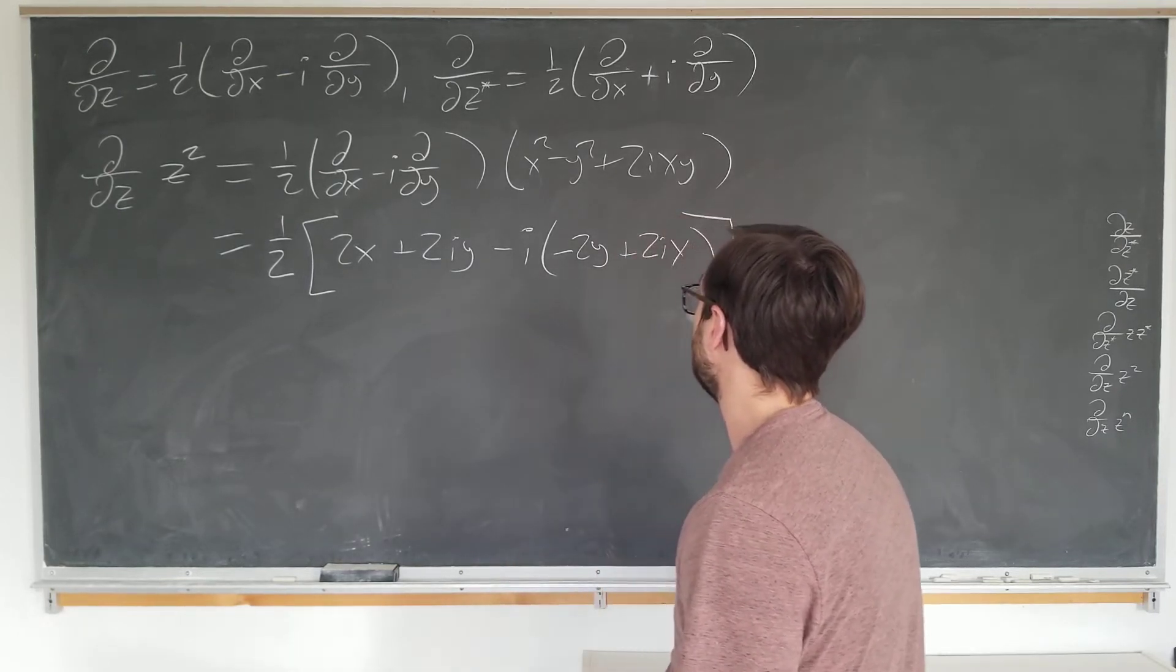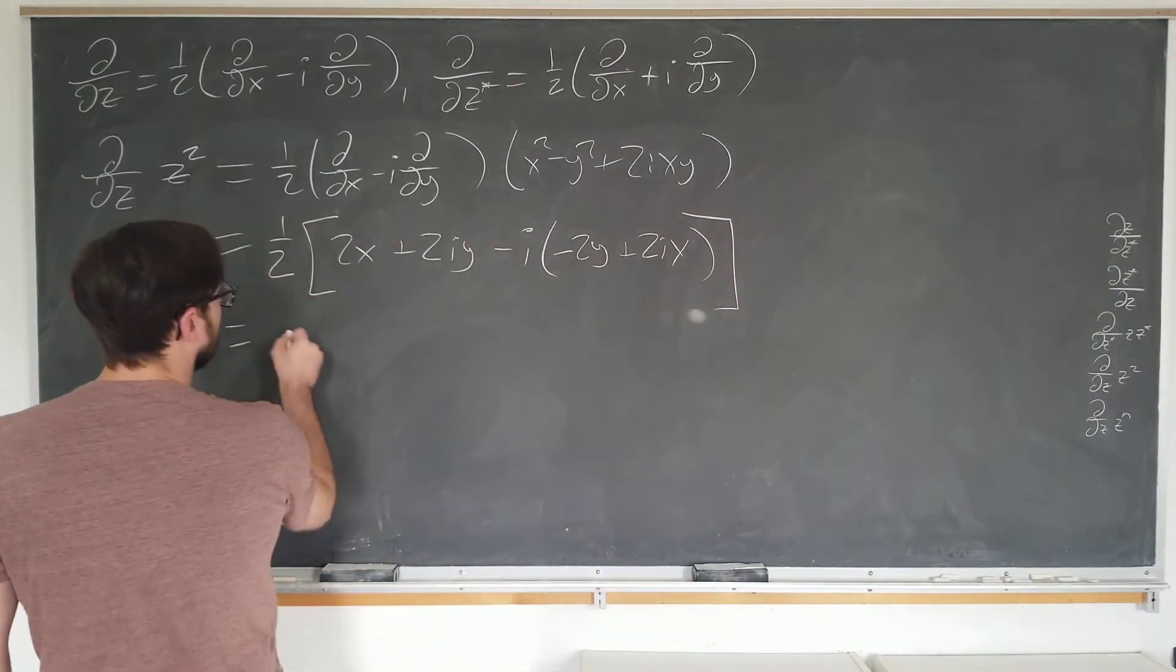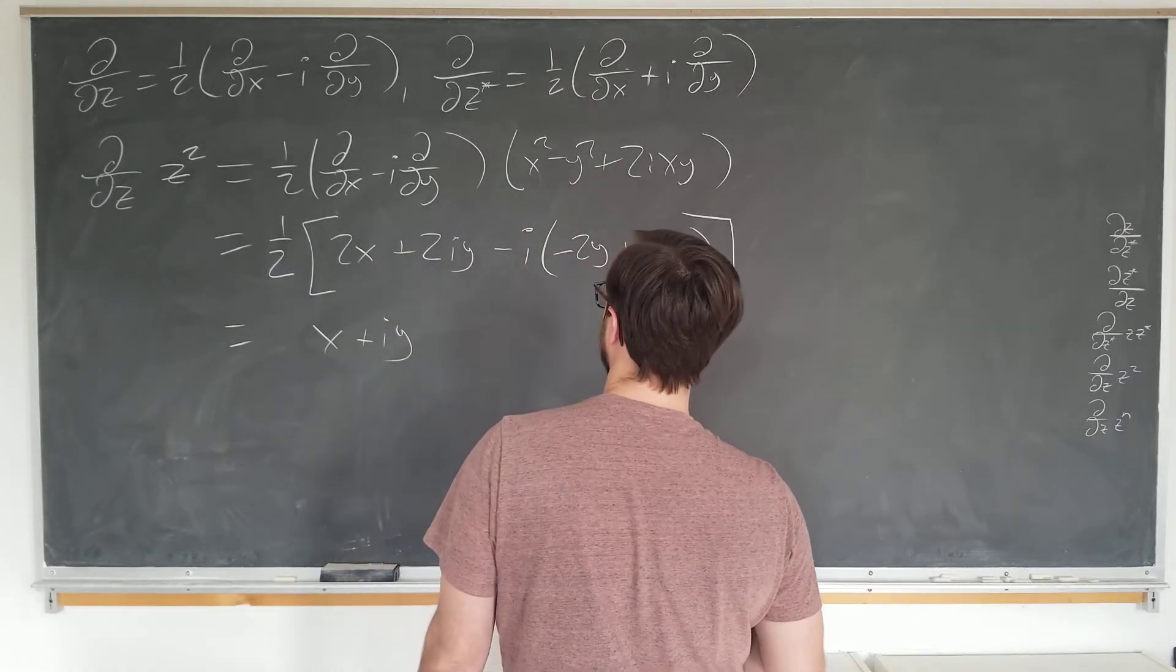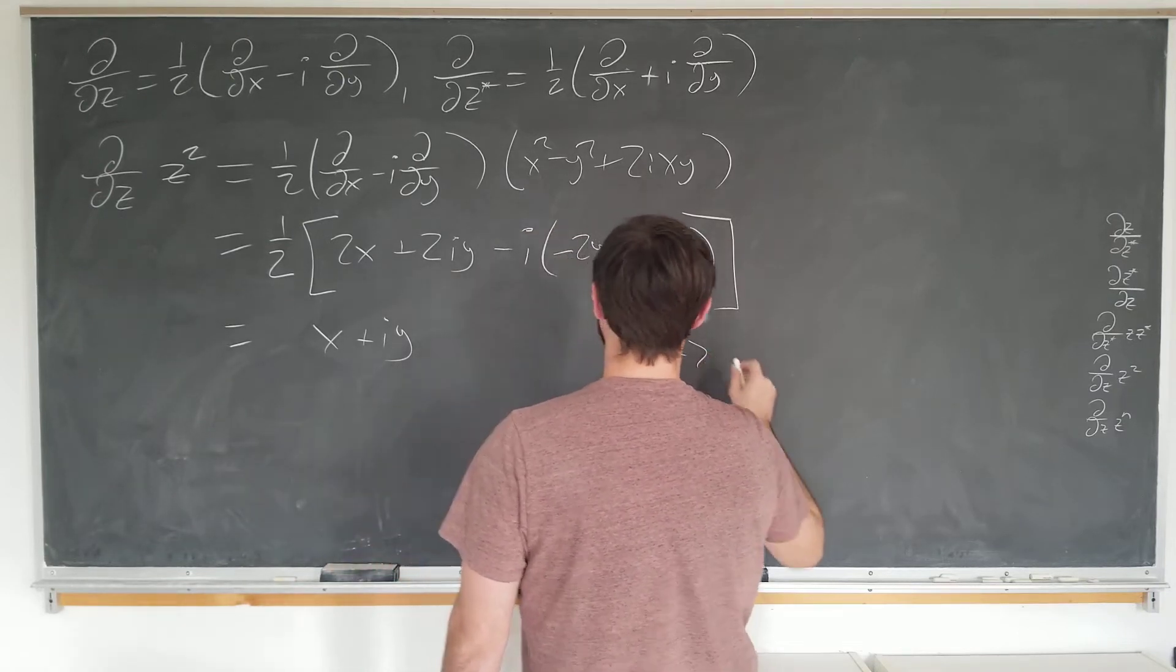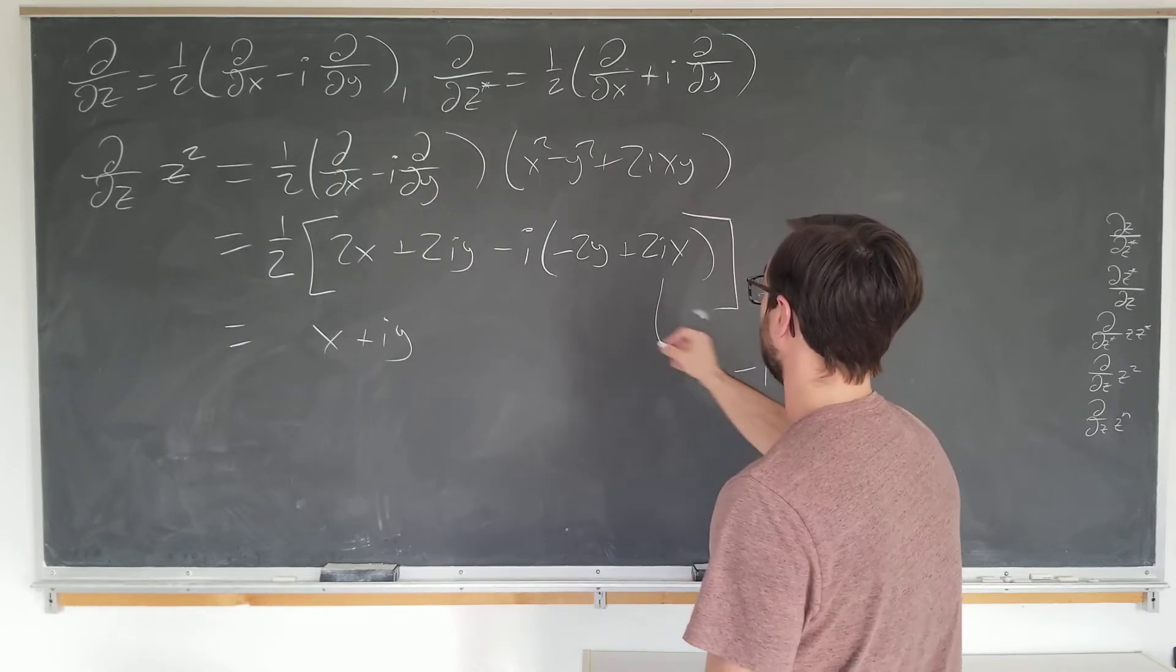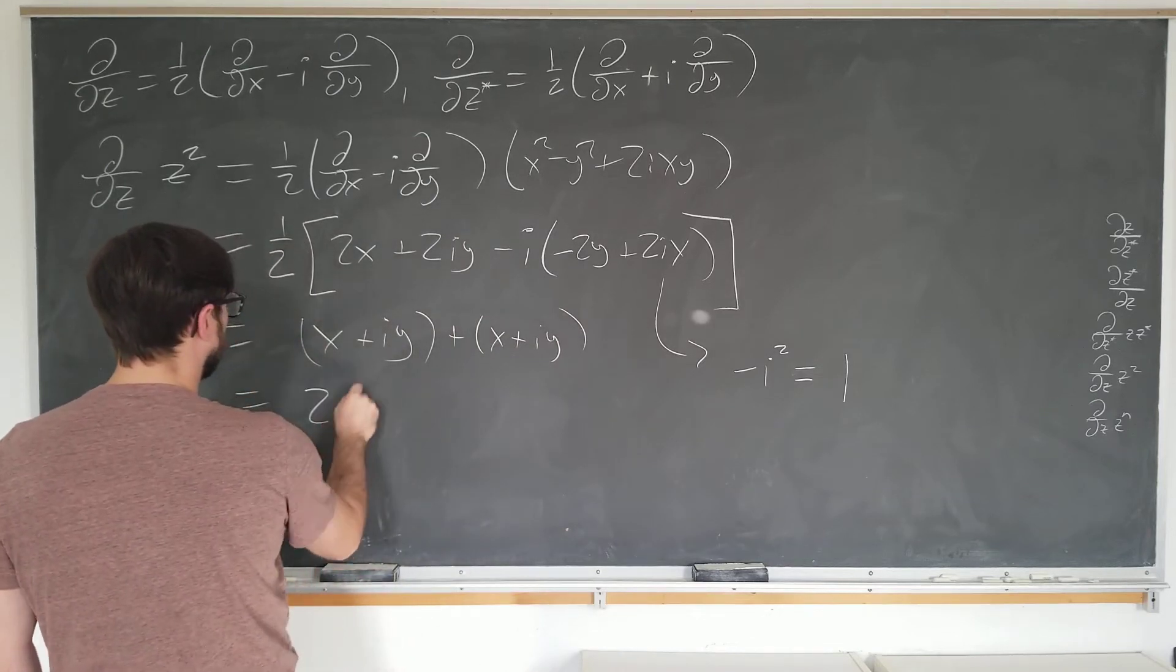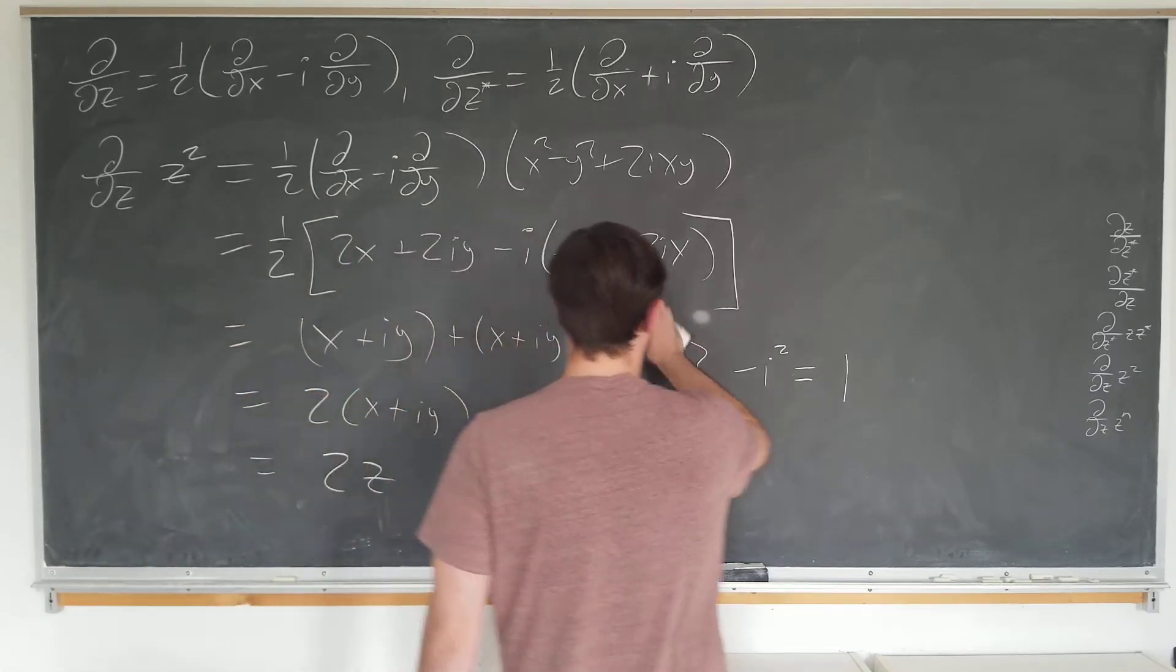And we see that nothing is actually canceling here. So the twos, x plus i y in this first term here. This one here, well, it's just going to be minus i squared is equal to one of course. So we get another factor of x plus i y, which is just 2 times x plus i y, which is just 2z. So that's awesome.